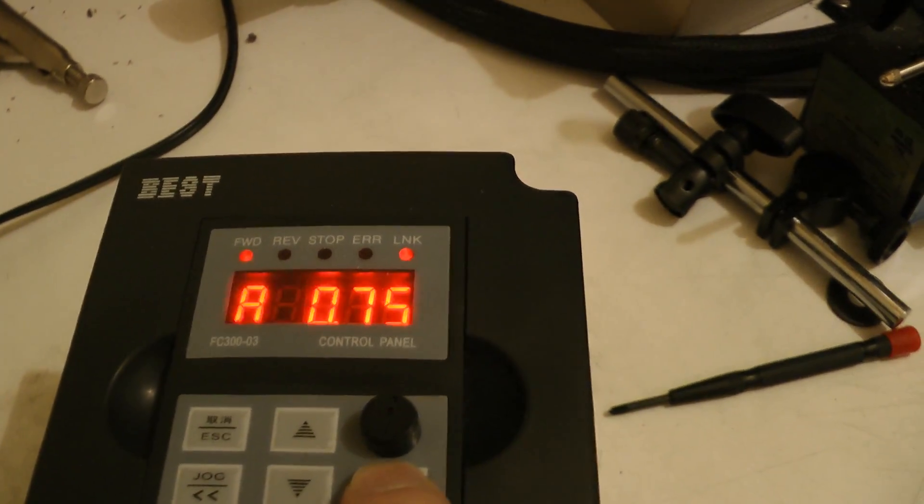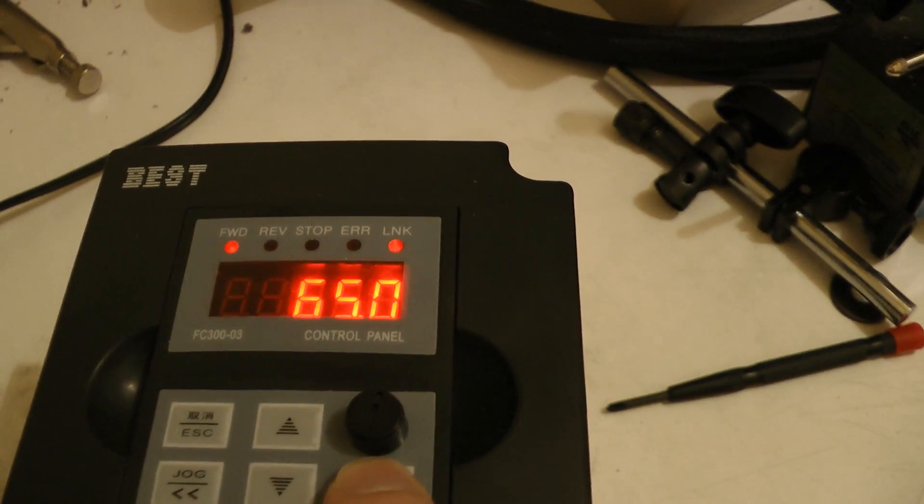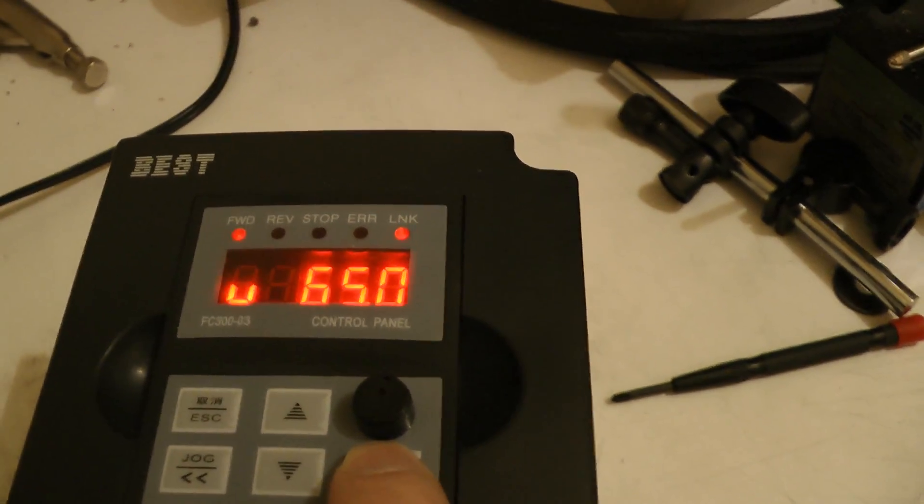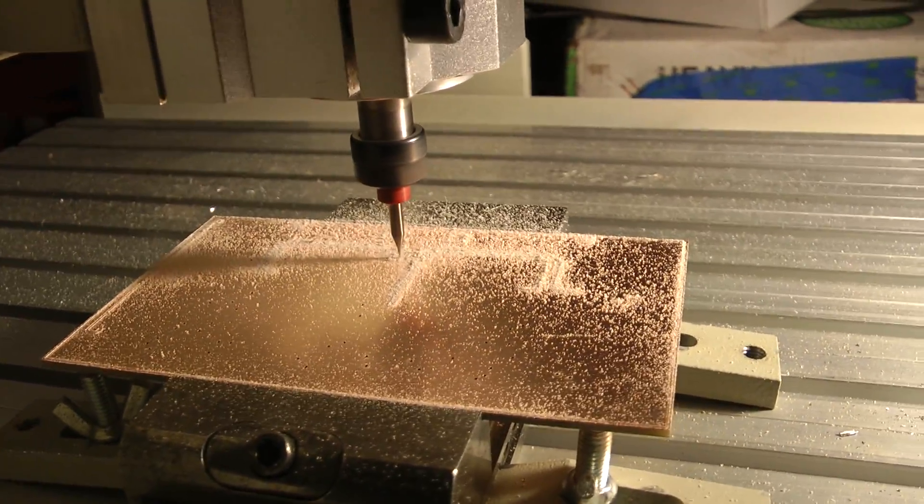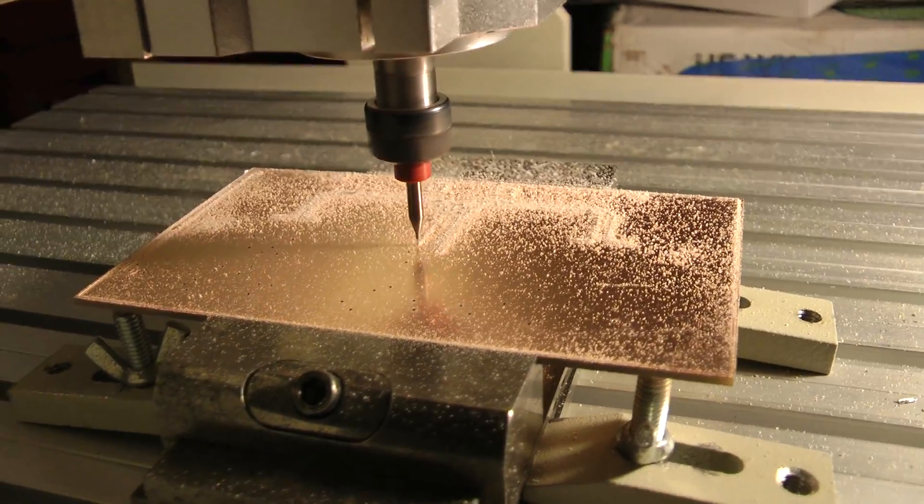It's using 750 milliamps and 65 volts to the new spindle. This is traveling at 24 inches per minute feed rate.